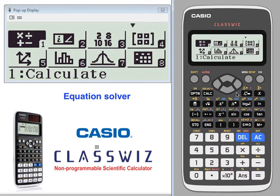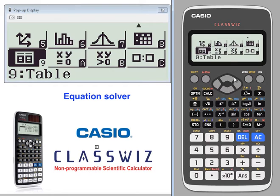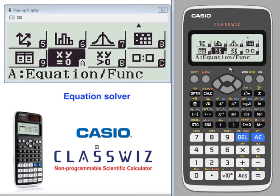Using the equation solver. Let's go into the equation solver. Toggle down. Equalities. We're going to go with letter A for equations and functions.